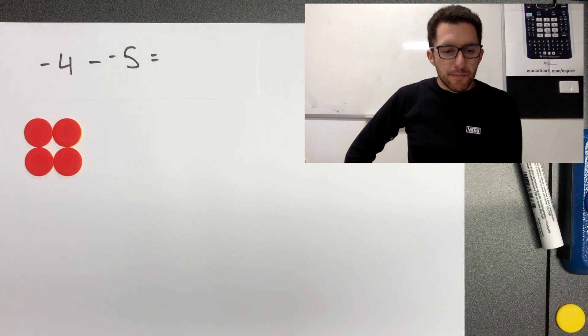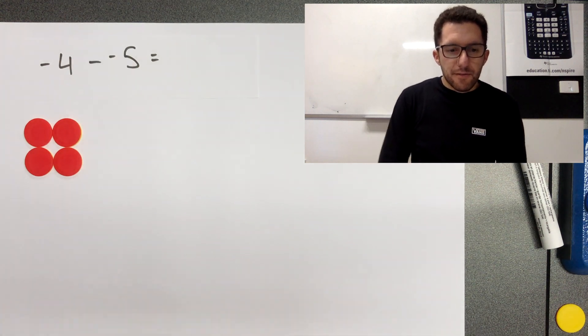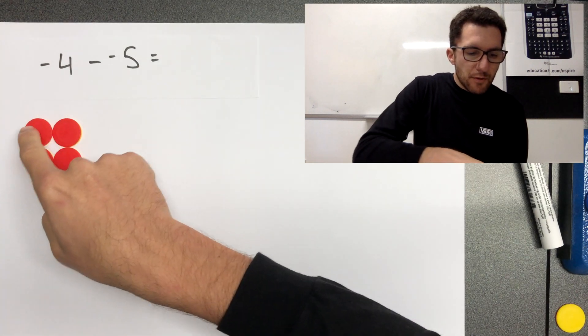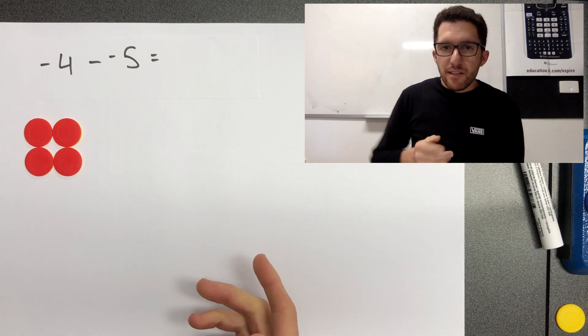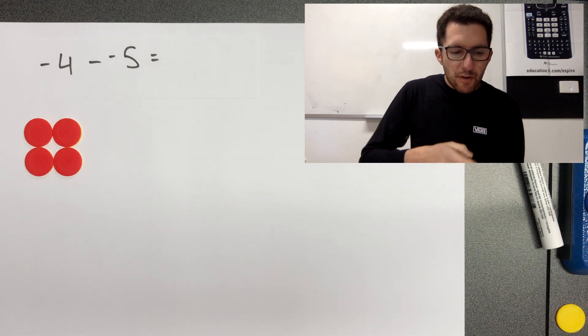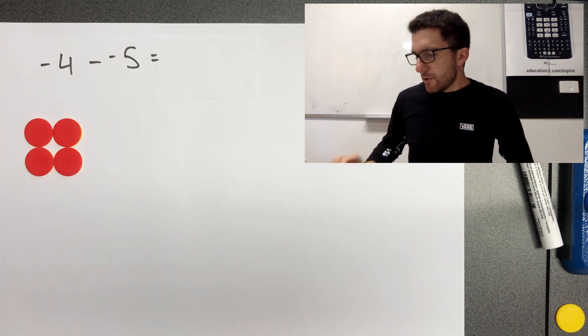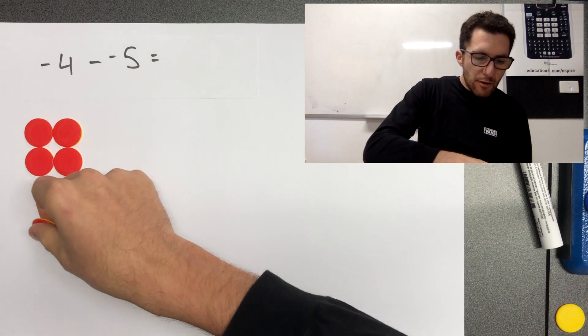Okay, last problem. Negative four take negative five. So here we are, we've got negative four. And we want to subtract negative five. But we don't have five negatives to subtract, we've only got four negatives. So like in the other question, we need to create another zero pair. Here we go.